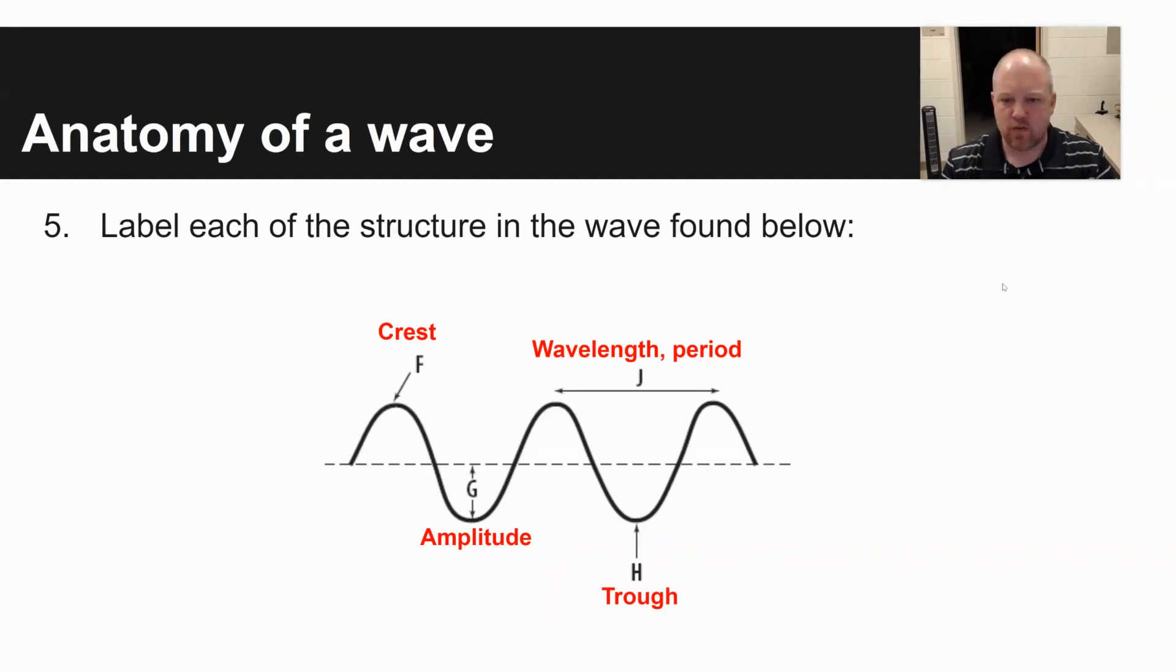The distance from crest to crest or the time from crest to crest or trough to trough or any repeating portion of a wave is the wavelength if we're talking distance, period if we're talking time. And then the height of a wave from that equilibrium point, from that at rest point to the top or bottom of a wave is the amplitude.